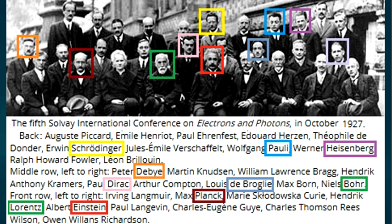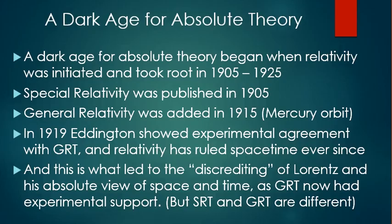Schrödinger, Pauli, and Heisenberg appear in the back row. Debye, de Broglie, and Bohr in the middle, and Planck in the front. We'll return to the Solvay conference in a bit, but first we must go a bit further back in time.